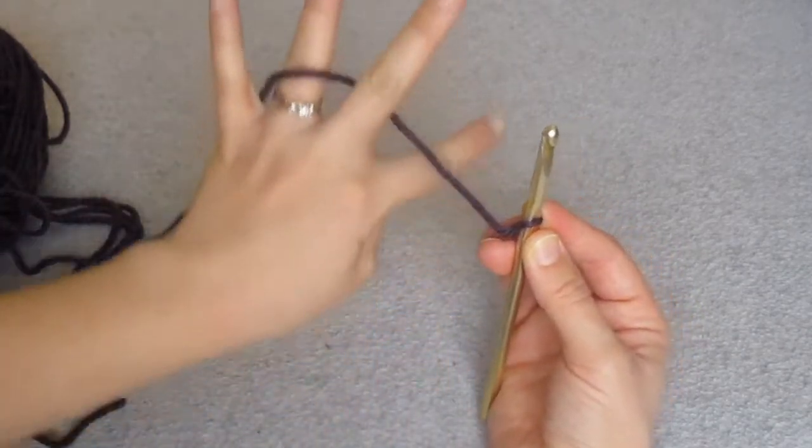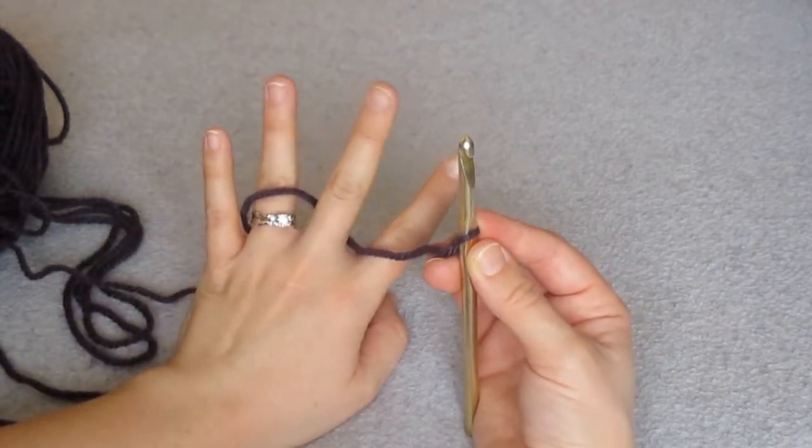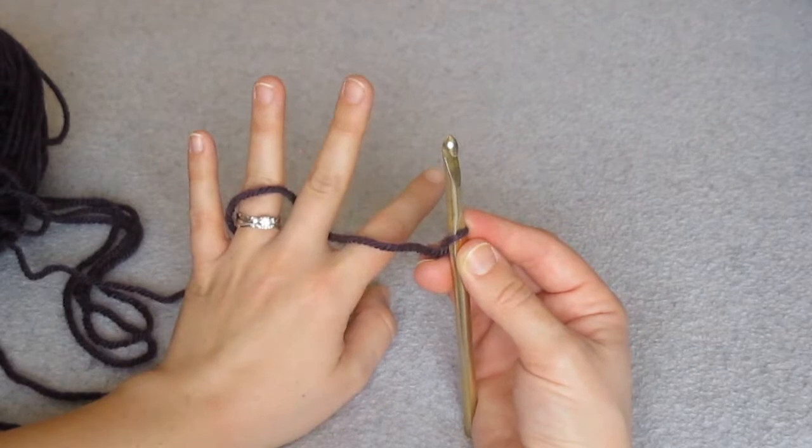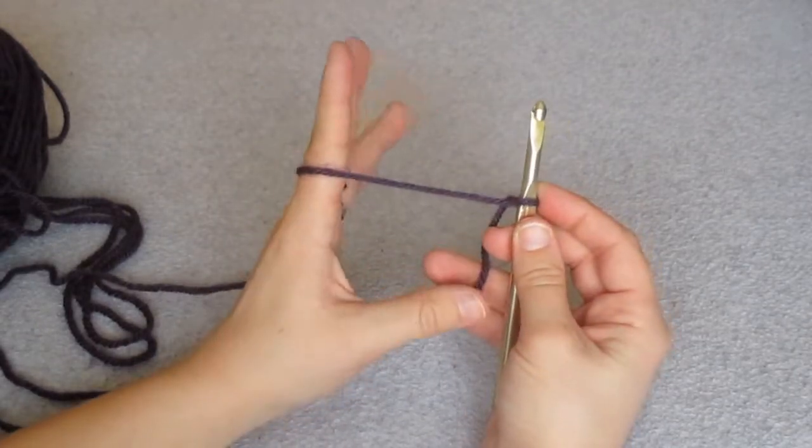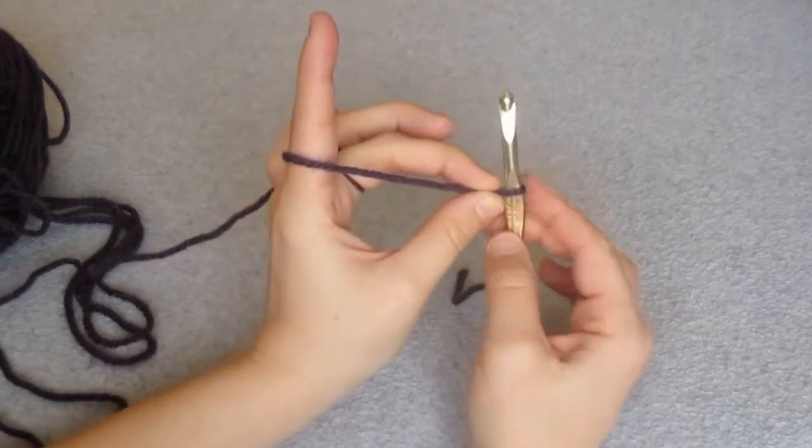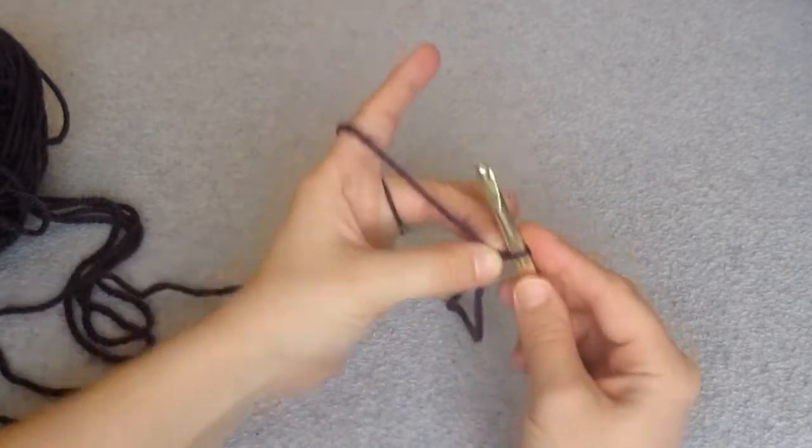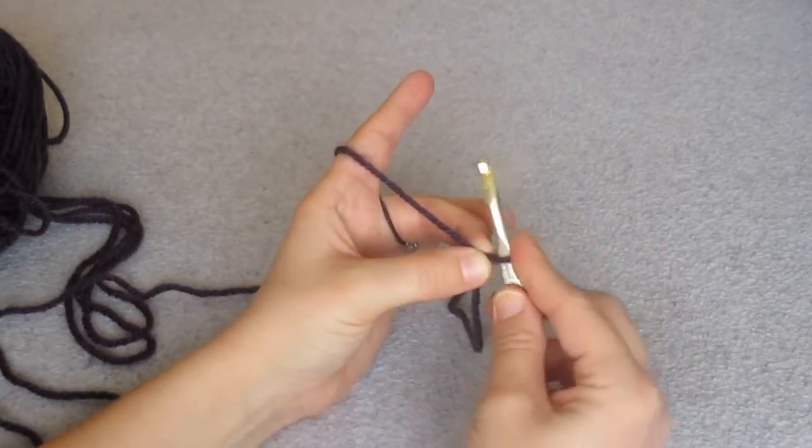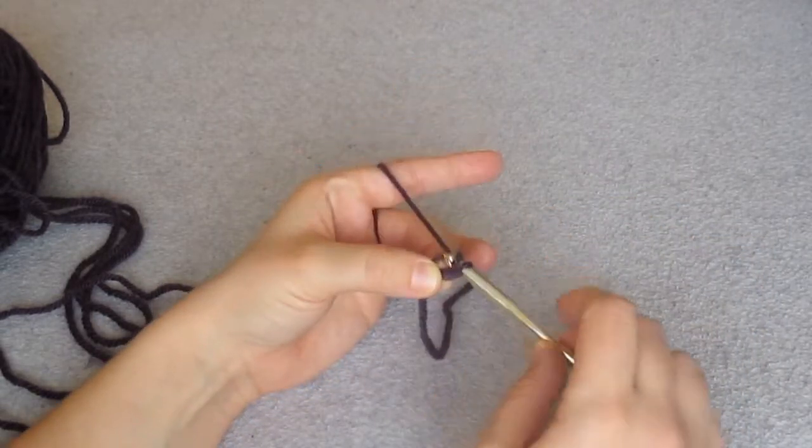Now what I like to do is I like to loop it through my fingers at this point. I put it over my ring finger, under my middle finger, and over again my pointer finger. Now what you'll want to do at this point is take your middle finger and your thumb and grab where those two strands of yarn meet. Now what you'll do is you'll take your hook and you go down, move under, and pull a loop right through.